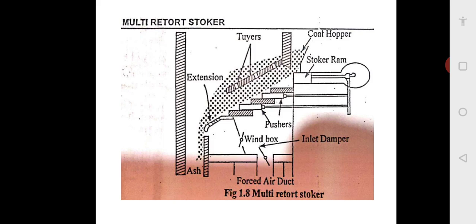Now coming to the multi retort stoker. Earlier there was only one retort, meaning coal was burnt on only one surface, but now there are multiple retorts. It may contain five to twenty-two tuyeres and pushers — tuyeres are for supplying air and pushers are to push the coal onto the retort.